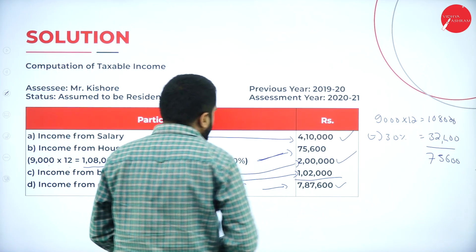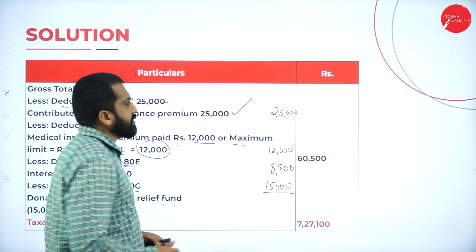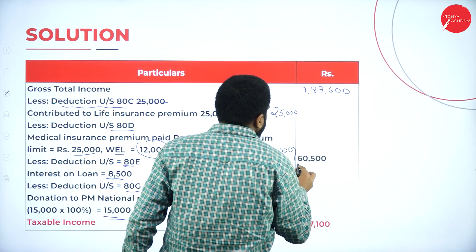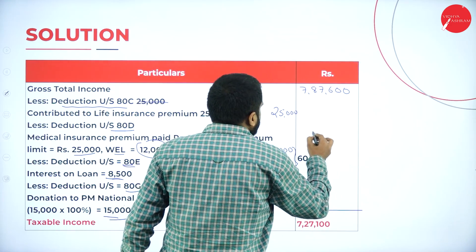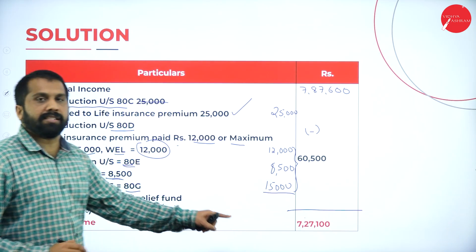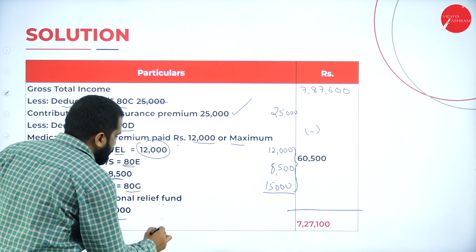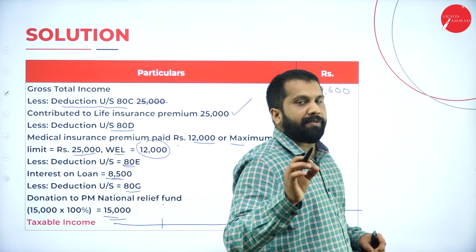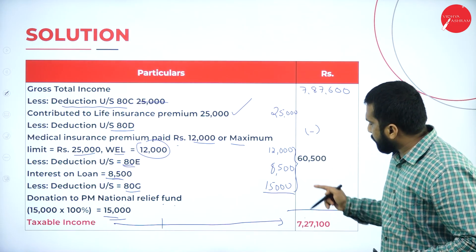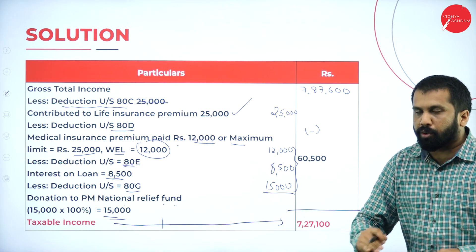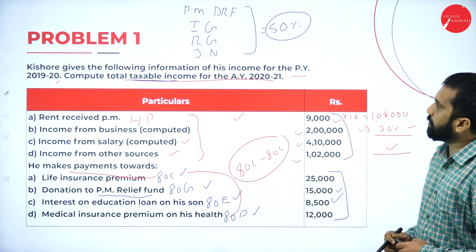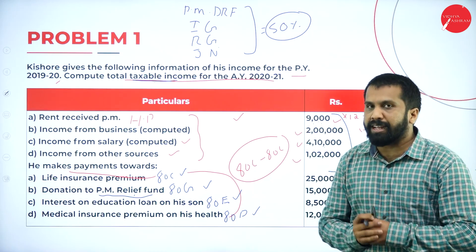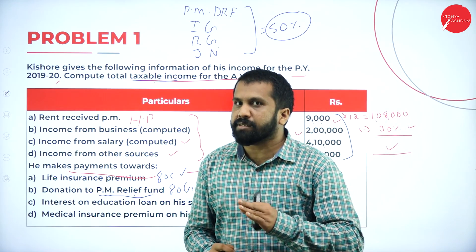So what was your gross total income? 7,87,600. Minus total deductions of 60,500, you will get 7,27,100. This is your taxable income — 7,27,100. In the question they have asked to compute taxable income only; they have not asked you to prepare the tax value. So taxable income is the final answer required.